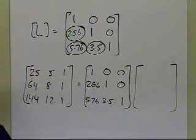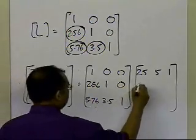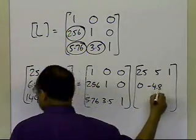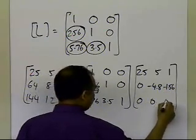The U matrix is the same which I got at the end of the forward elimination steps, so that's 25, 5, 1, 0, minus 4.8, and minus 1.56, and 0, 0, and 0.7.